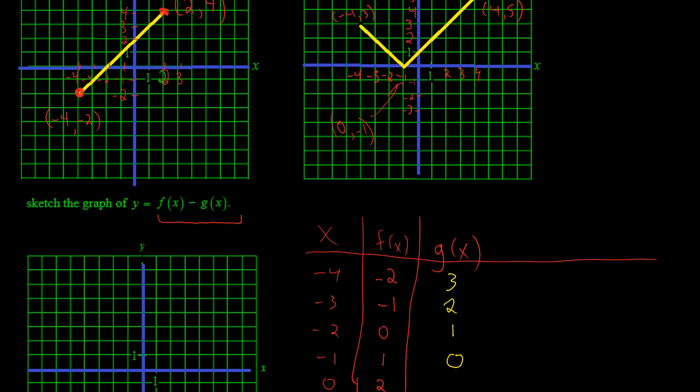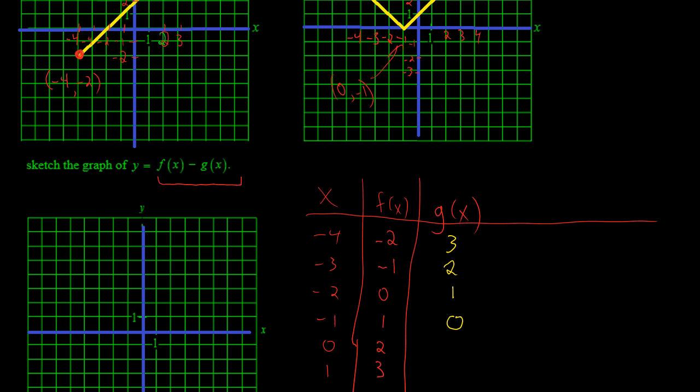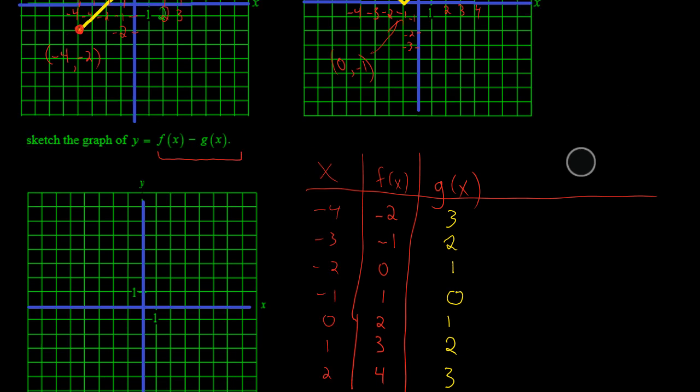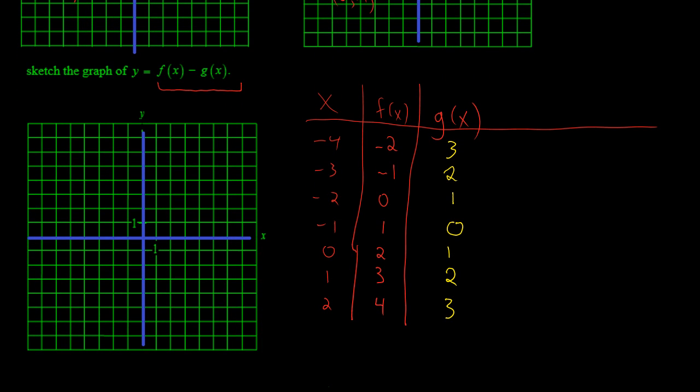Now it's increasing by 1. So at 0, it's negative 1. Then it's 0 at negative 1. And then I'm assuming at 1, it's 1. At 2, it's 2. And then the graph goes on. It goes 3 and 4. So I'll write this in just for the time being. 3 and 4.